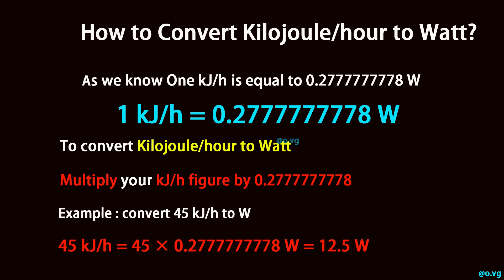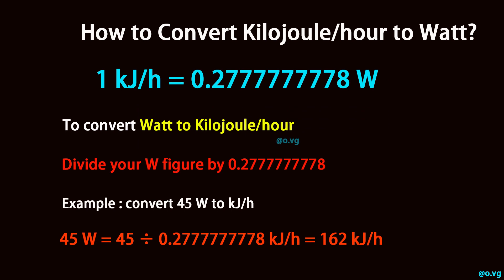45 kilojoule per hour is equal to 45 times 0.2777777778 watt, which equals 12.5 watt. To convert watt to kilojoule per hour, divide your watt figure by 0.2777777778.